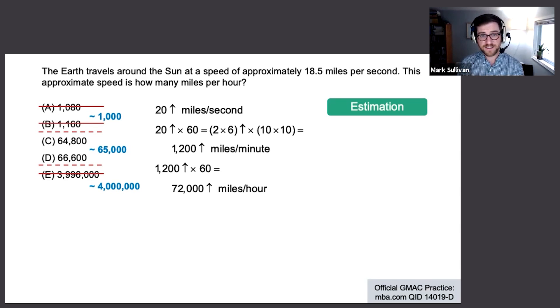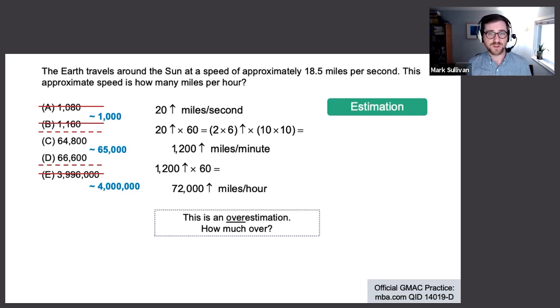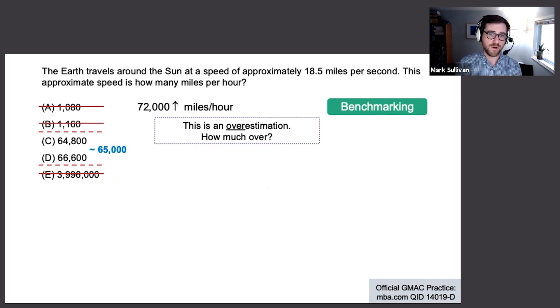Now, notice both of the remaining choices are a little smaller than what we got here. That makes sense because I rounded the 18.5 up to 20. What do we do here though? We're left with two. If we'd been left with one, the estimation would have gotten the job done. Well, this is when we can bring in a little benchmarking to finish the job. So we can estimate and then adjust to get to a precise answer. We don't just know that we estimated, we know exactly how we estimated. We rounded this number up by 1.5, so let's go correct for that error.